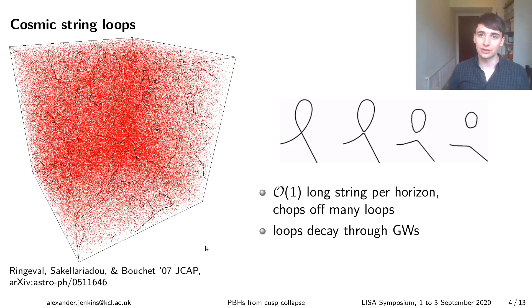And what happens then is these strings wiggle around because they've got a lot of energy density in them and if they bend over and touch themselves they can chop off loops through that reconnection process I was talking about on the last slide. So what happens is you tend to fill up your Hubble volume with a very, very large number of cosmic string loops which are shown in red in this simulation. And these loops wiggle around at relativistic speeds, they emit a lot of energy in gravitational waves and they decay.